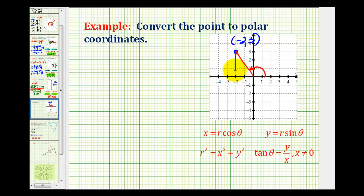This would be our reference triangle to help determine r and theta. We could label this negative 2 and label this 3. So the hypotenuse, or r squared, would equal x squared plus y squared. We have r squared equals 4 plus 9, that's 13. So r equals plus or minus the square root of 13.